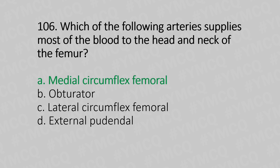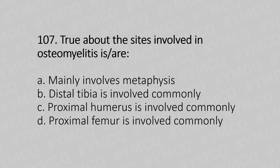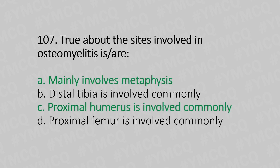Now let's move to question number 107. Truth about the sites involved in osteomyelitis. Option A, mainly involves metaphysis. Option B, distal tibia is involved commonly. Option C, proximal humerus is involved commonly. Option D, proximal femur is involved commonly. And the answer is Option A, mainly involves metaphysis. Option C, proximal humerus is involved commonly.